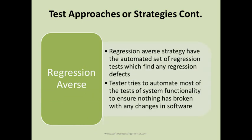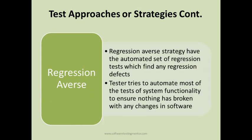Regression averse strategy uses an automated set of regression tests to find any regression defects. It is mostly an automated testing approach in which you automate most of the tests for the system's functionality. You then execute those automation tests to ensure that nothing has been broken when there are changes in future software releases. Most things in regression averse strategy must be automated because the regression suite needs to be executed again and again.